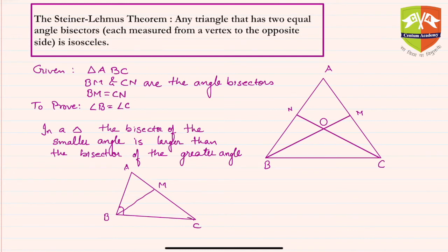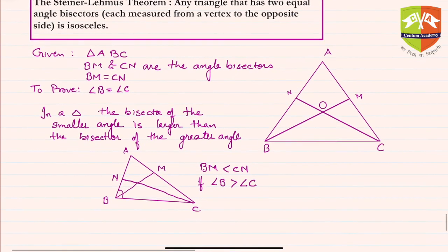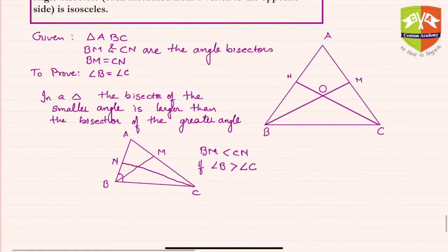So the bisector of this, let's say BM, will be lesser than the bisector of angle C. Okay, lesser than the bisector of angle C, CN. So BM is less than CN if angle B is greater than angle C. This is what we learned in the previous session. Now if that is so in this case as well, then the bisectors must be greater than or less than each other, isn't it?